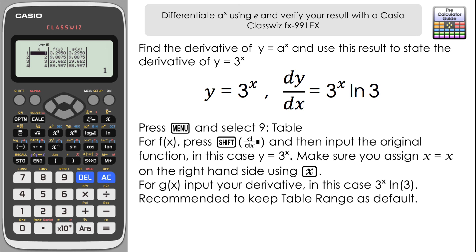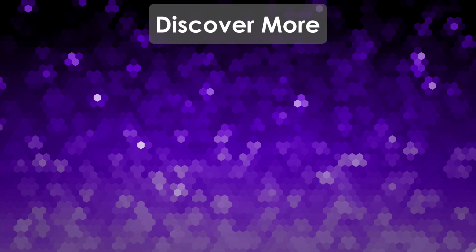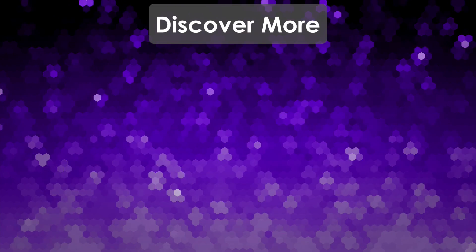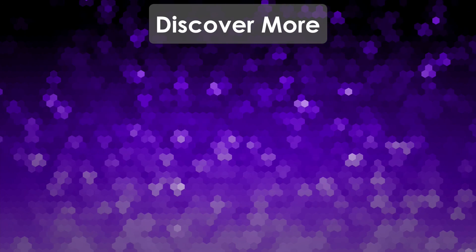So there we go, how we can use e to help us differentiate a to the power of any value, or in fact if we've got any base we can just apply this general rule to it. And then we can always check results, numerical results, using the ClassWiz and the table mode and the derivative function that the ClassWiz has. But that's it for this video. Don't forget to subscribe for any future videos, and I will see you next time on the calculator guide.